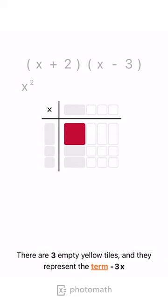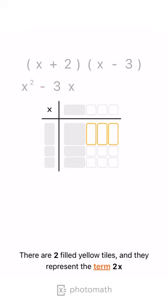There are three empty yellow tiles, and they represent the term negative 3X. There are two filled yellow tiles, and they represent the term 2X.